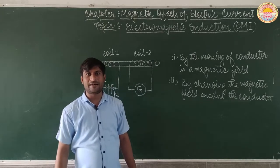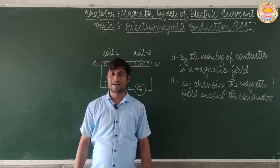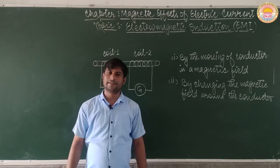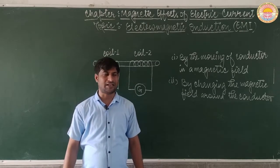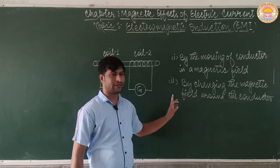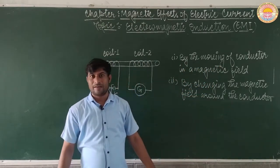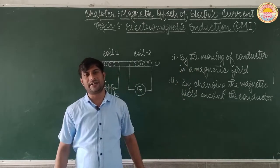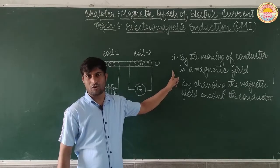The induced electric current is maximum when the direction of force or motion is perpendicular, or at right angle to the magnetic field. When the conductor is placed at right angle to the magnetic field, the electric current induced in that conductor is maximum. Between both cases, it is more convenient to move the conductor in a strong magnetic field to easily induce electric current. So the first case is very common for electromagnetic induction.